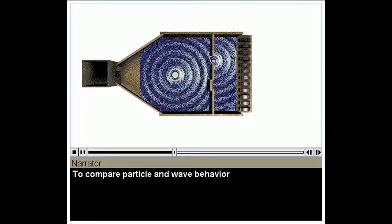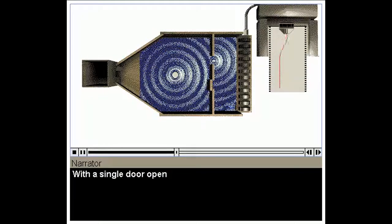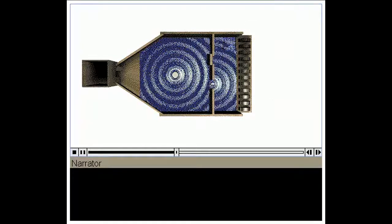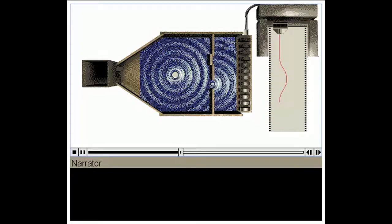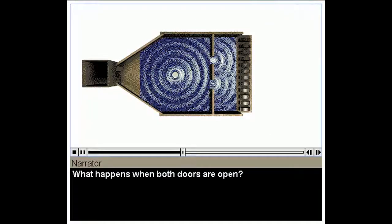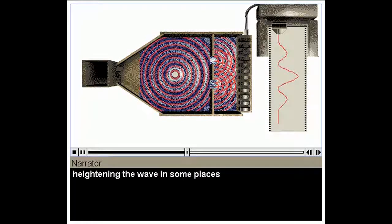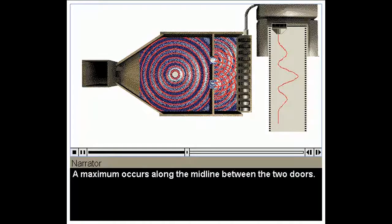To compare particle and wave behavior, we replace the marbles with water, and the counters with detectors for wave intensity. With a single door open, the results for waves look the same as for particles. What happens when both doors are open? We get an entirely different graph. The waves passing through the two doors interfere with each other, heightening the wave in some places and canceling it in others. A maximum occurs along the midline between the two doors.